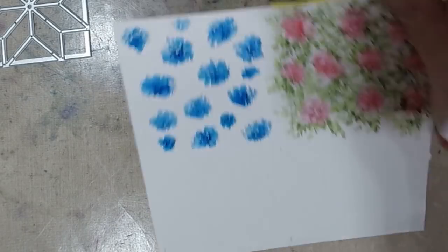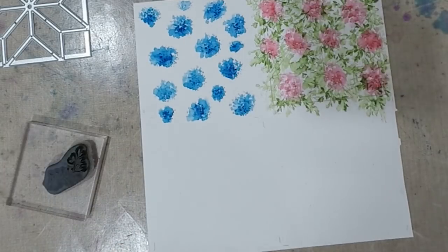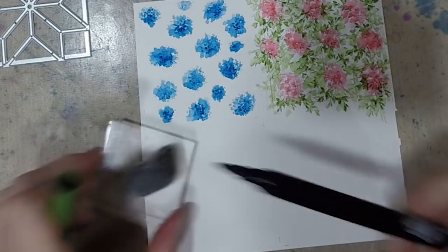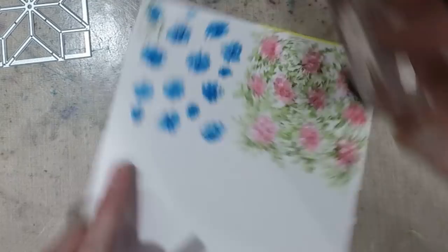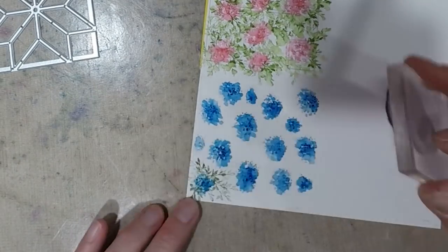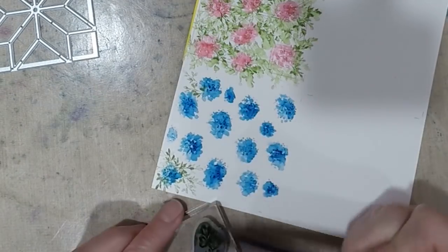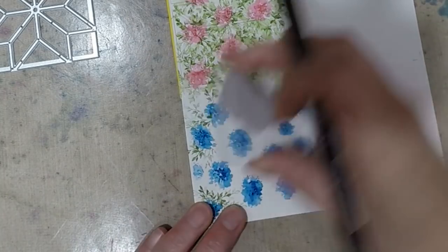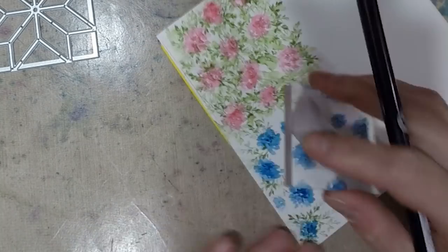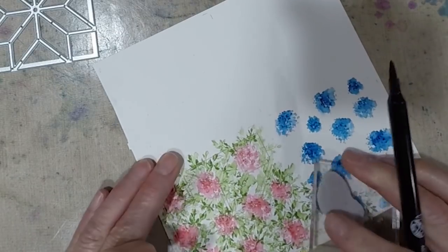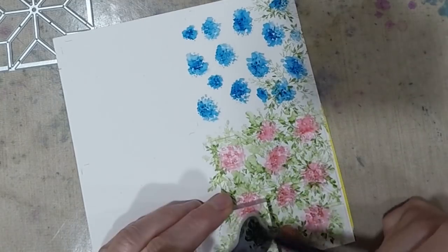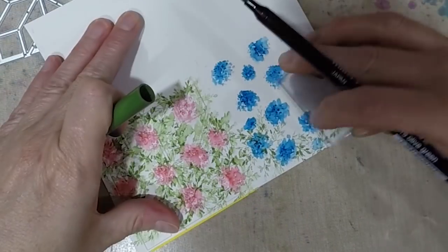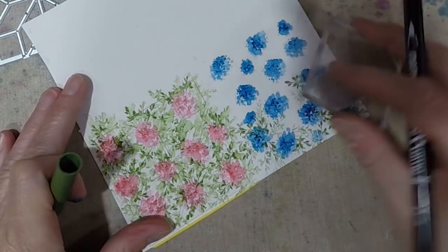So those are all my blooms. Now I'm going to go in with my vine again and just do the same exact process I did on the other side and just really add some greens to this. Then I'll repeat this entire process on that whole other side and, but it's all going to be blues because I needed more blues than I did pinks.